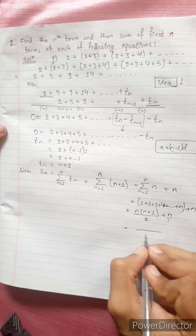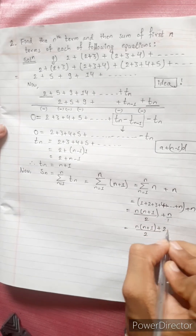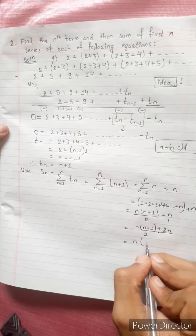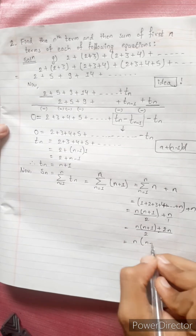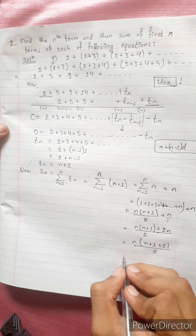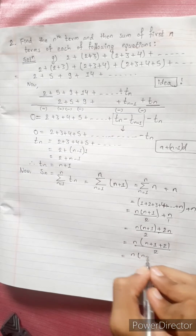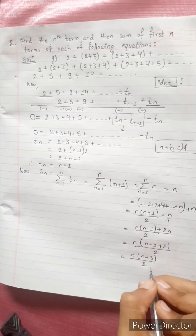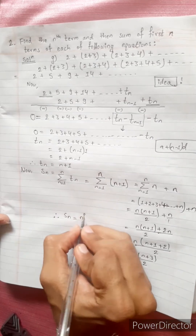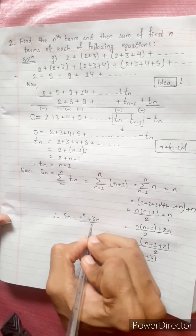So n(n+1)/2 plus n. This gives us n(n+1) plus 2n, all divided by 2, which equals n(n+3) divided by 2. Therefore S_n equals n squared plus 3n, divided by 2.